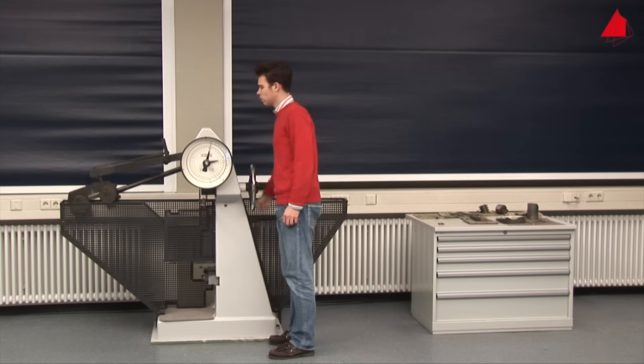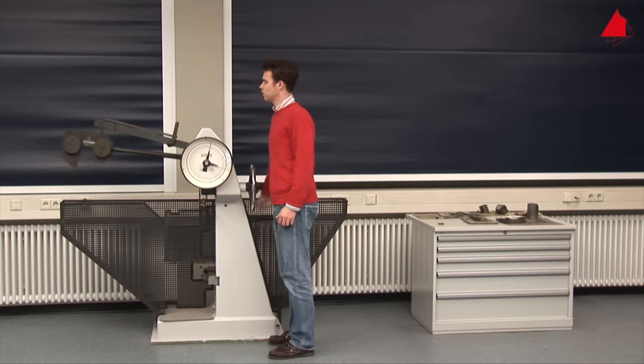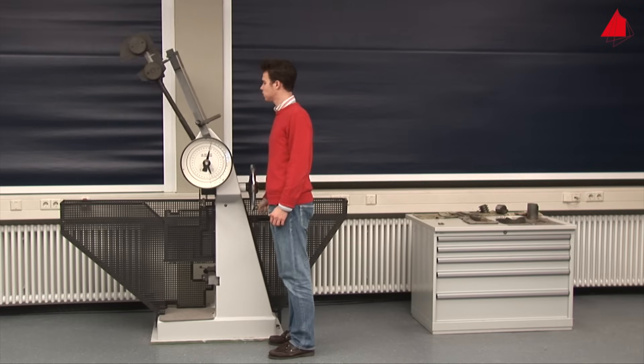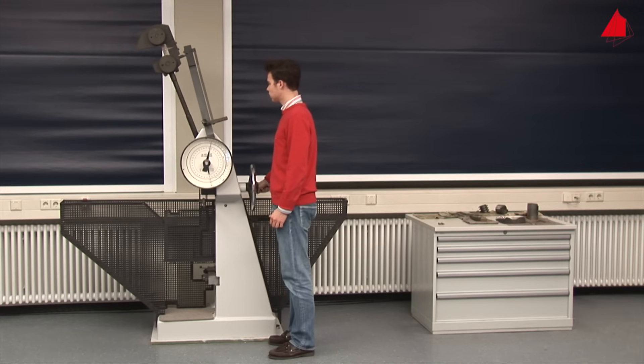The pendulum on the machine has a heavy weight at the end. This is lifted into the starting position in step 1. Then the tester checks whether the testing machine has been adjusted accurately.